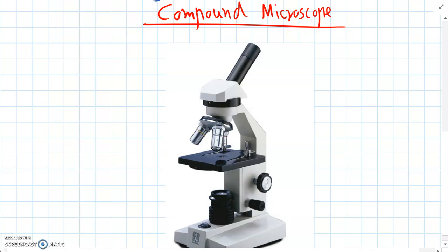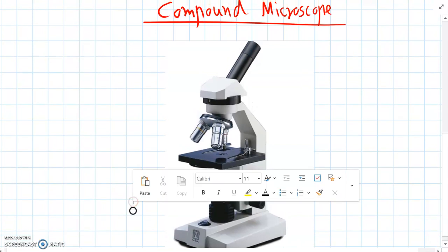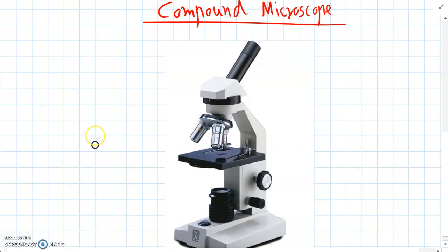And remember this is a light microscope so we're using light to view our sample. And now we'll look at all the different features of a light microscope so we know what they do and that will help us when we first start to use them.